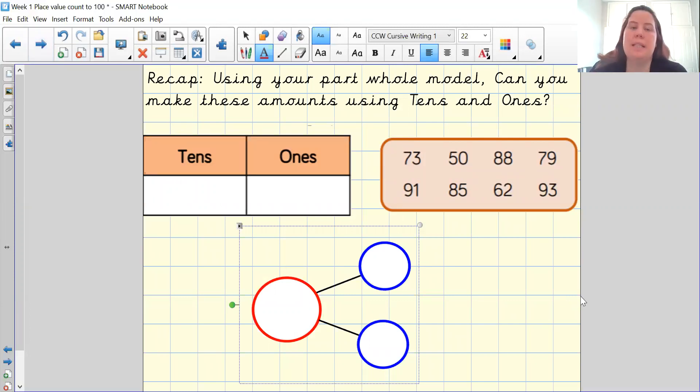So let's recap what we did yesterday. What I'm going to ask you to do is using your objects at home and your place value grid can you make these numbers please?